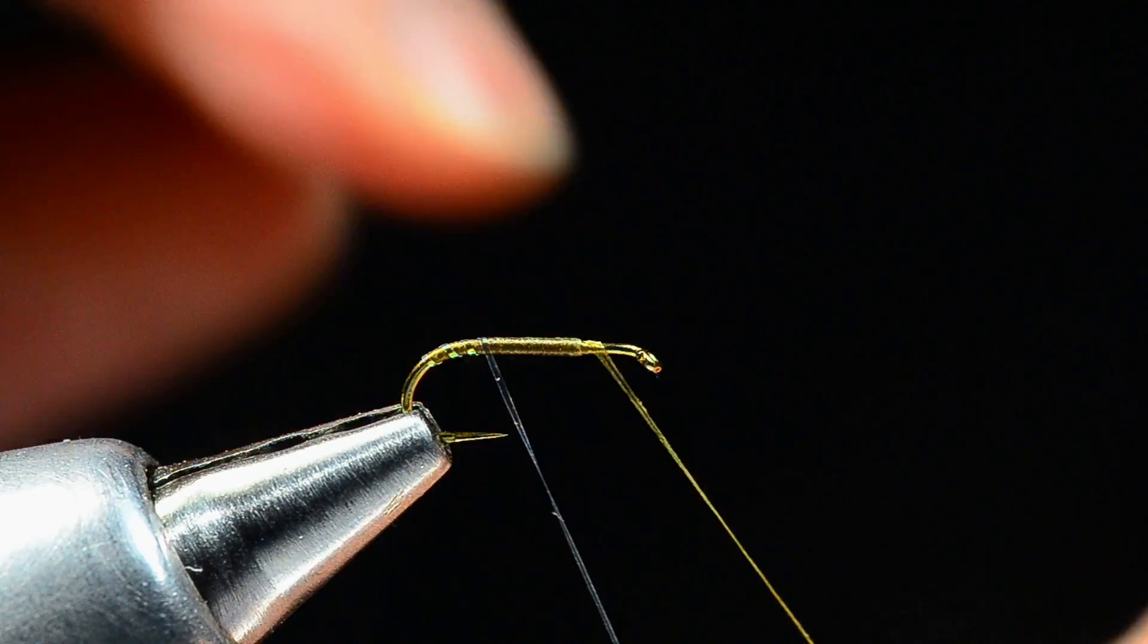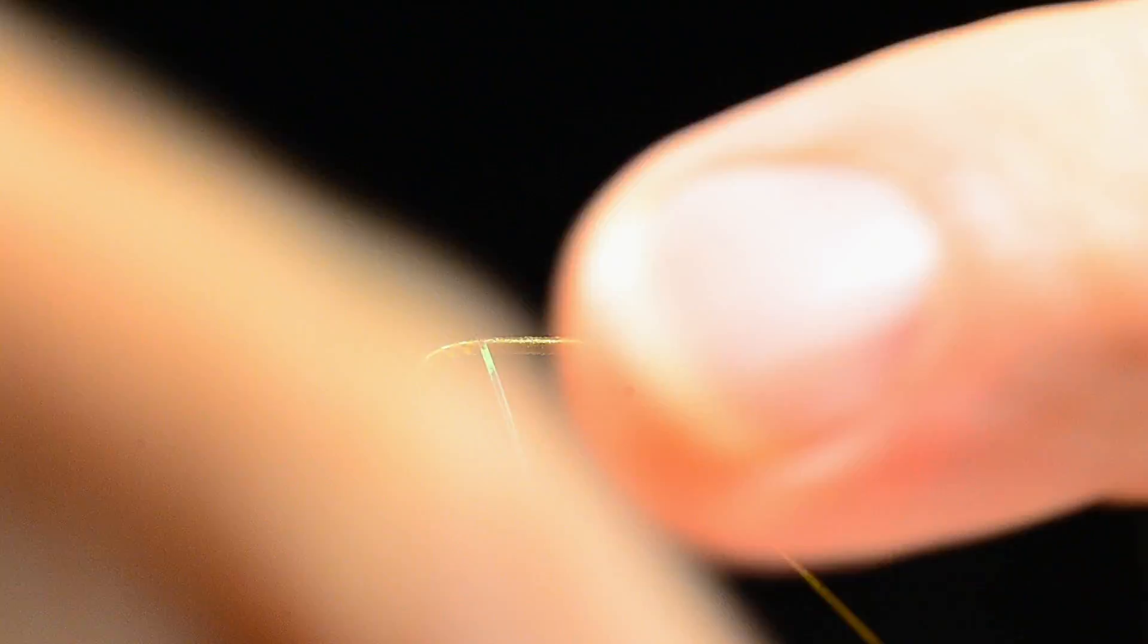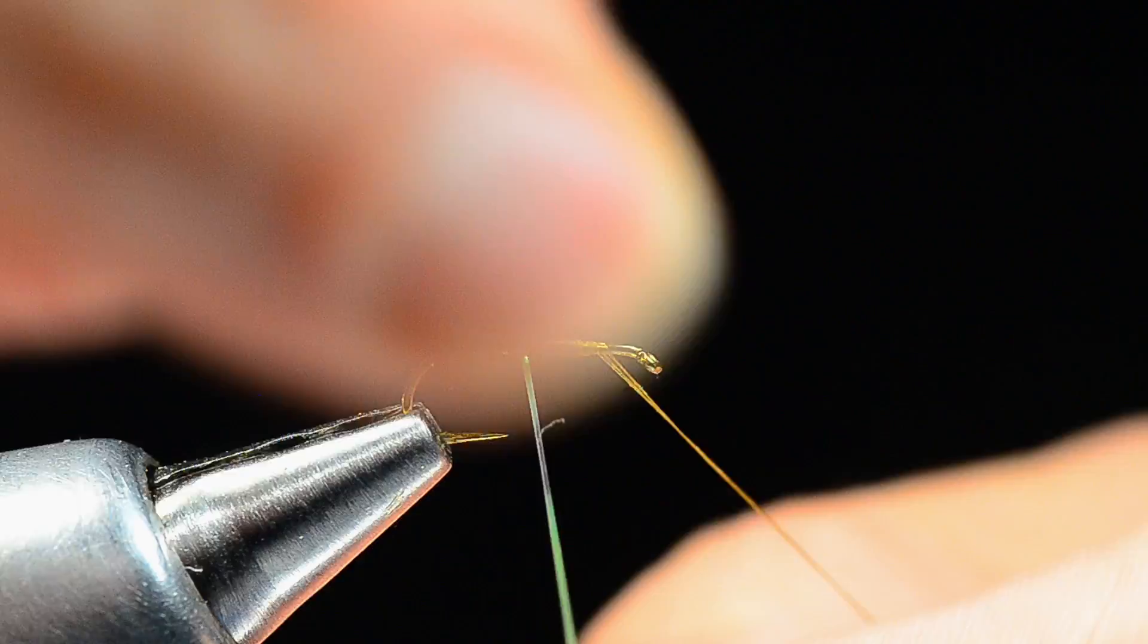Then I'm going to take my pearl crystal flash and I'm just going to rib it through the body. Let's try that again with just nice evenly spaced turns, there we go.